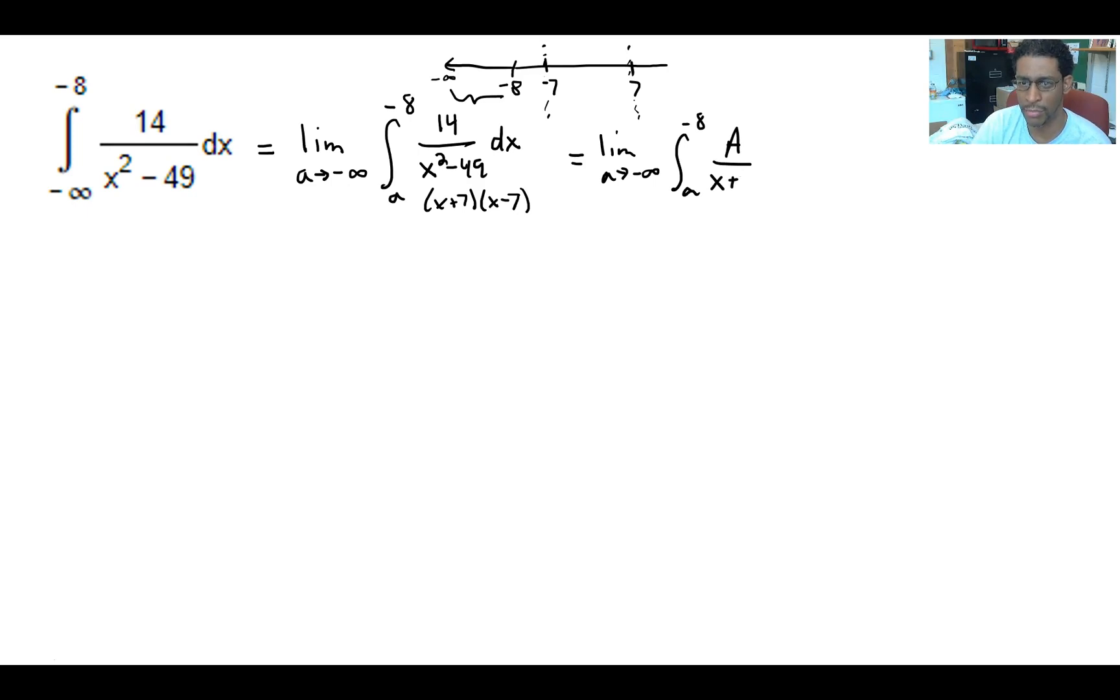We have that over x plus 7 and a capital B have that over x minus 7. Quickly figure out what A and B are and then we can get through the integration. A would be multiplied by x minus 7, B would be multiplied by x plus 7, in order to attain the original numerator of 14. This is true for all x values.